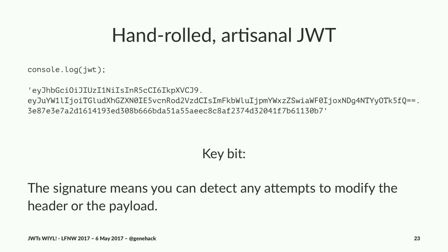If you took that JWT variable and dumped it into console.log to see what it is, it looks like this — I put line breaks in after the dots just to make it easier, but it actually comes out all in one line. This is a JSON Web Token. The key point: I can give you this JSON Web Token and make you give it back to me at some later date, and I can be sure you didn't change anything in it, because I have the secret that was used to generate the signature. If you change anything in the header or the payload, it's going to invalidate the signature.